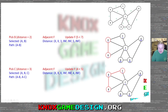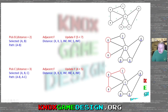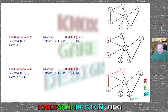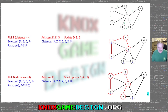The remaining values are C at three, infinity, infinity, F at five, infinity. The least is three, so we pick C. C is adjacent to A (already picked) and F. F is currently five. C is three and the distance from C to F is one, so three plus one gives us four. Four is less than five, so we update F to four. The only non-infinity remaining is F at four, so we pick F next.